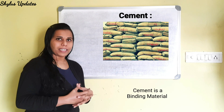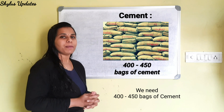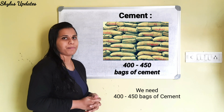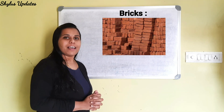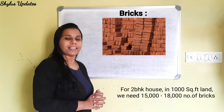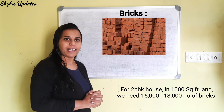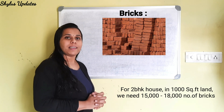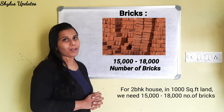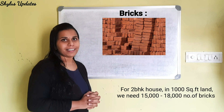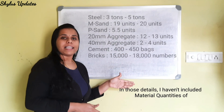Cement is a binding material. We need 400 to 450 bags of cement. For a 2 BHK house in 1000 square feet land, we need 15,000 to 18,000 number of bricks.